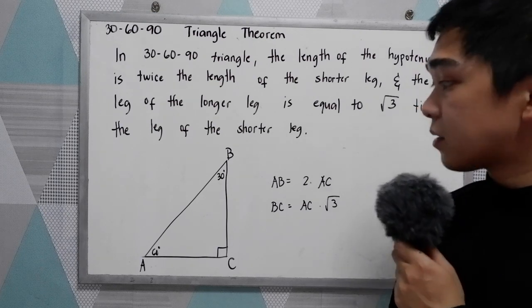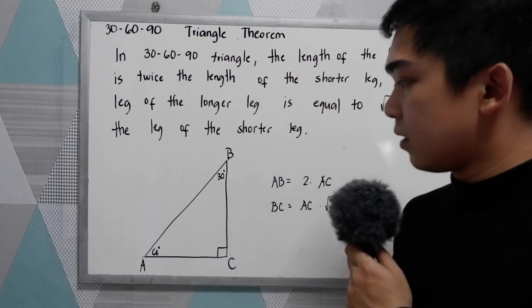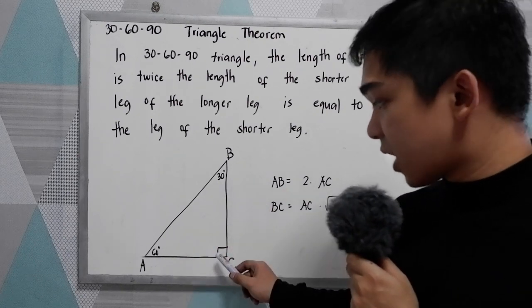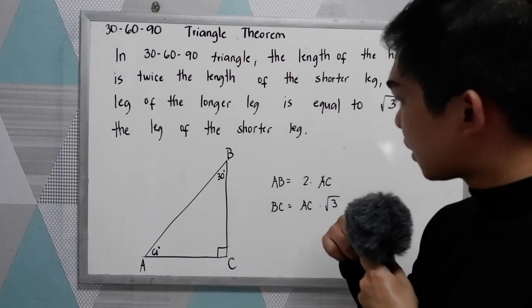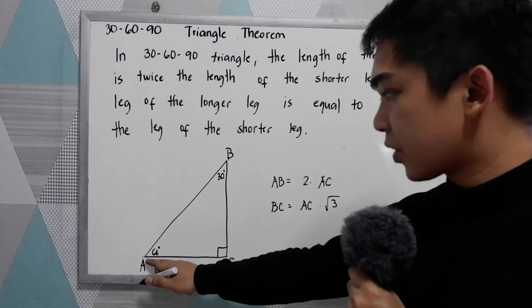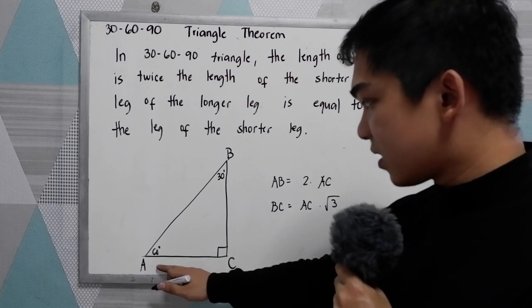Now to illustrate, let's have our triangle ABC. We have the 30, 60, and 90, which is our right angle. Now our shortest leg here, the shortest leg, is AC.